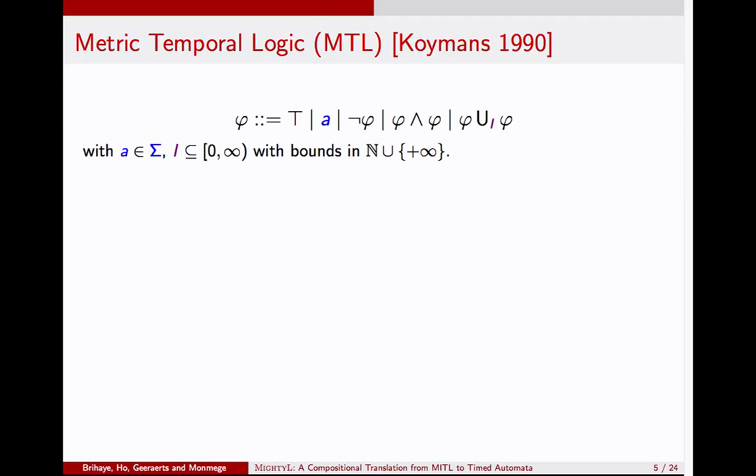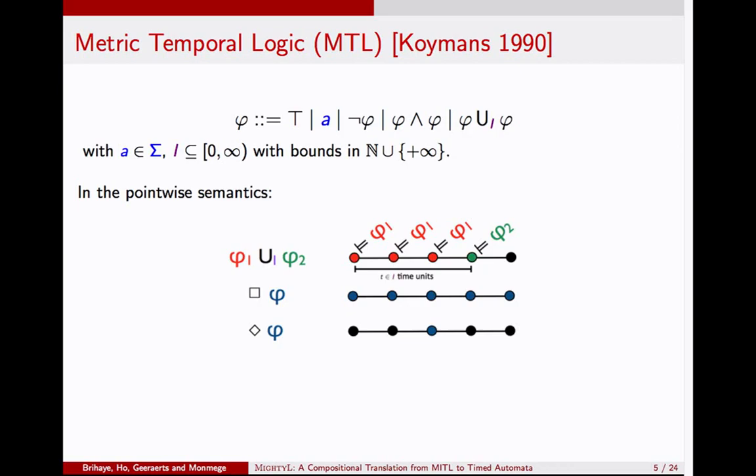This is metric temporal logic, proposed by Koymans in 1990. This is an extension of LTL with these intervals. You can put an interval on your temporal operators in LTL. Its point-wise semantics can be understood as this: if you specify an interval on your temporal operator, then in addition to the usual LTL meaning of until, phi 1 holds continuously until phi 2 holds, you also require that the current point and your witness point are separated by distance t, by time t, and that t belongs to your specified interval i. If you have a property like this, there will be a move up event in the future, and it will be followed by an arrive event after exactly five time units. You can write it as the MTL formula F5 to 5 arrive.